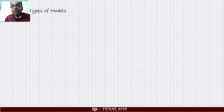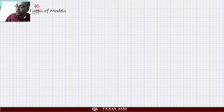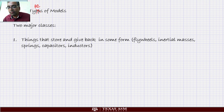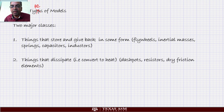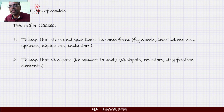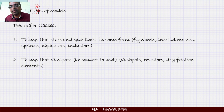Now let's look at the two major types of models. The first type stores and gives back energy: flywheels, inertial masses, springs, capacitors, and things like that. The second type converts mechanical work into heat: dashpots, resistors, dry friction elements, and so forth. Those are the two major ideas. We already saw examples of the first kind, and we will also look at examples of the second kind.